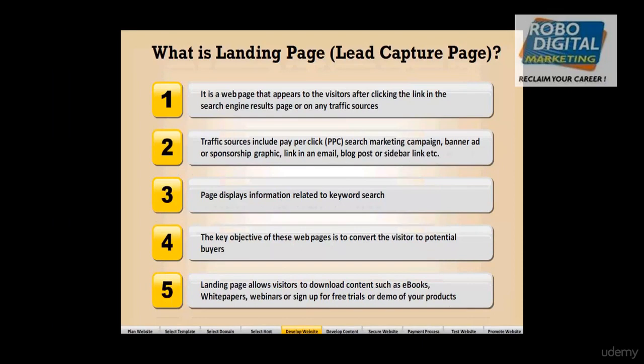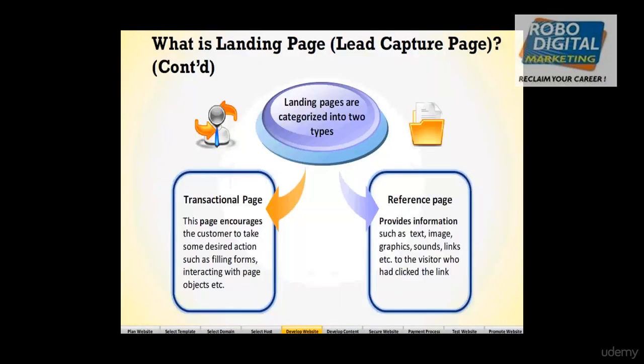There are two types of landing pages. One is a transactional page, which is all about filling up a form or buying the product on the page itself. The other is a referral page, which talks about product information, company information, or service information using text, images, graphics, sound, links, etc.